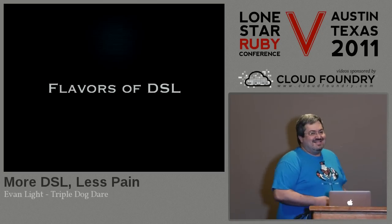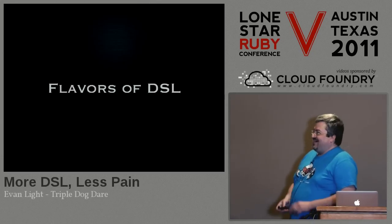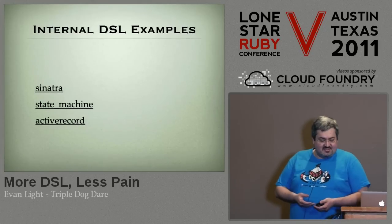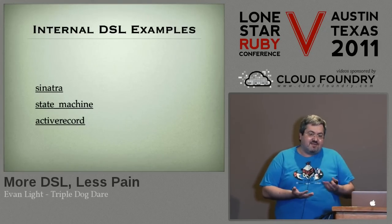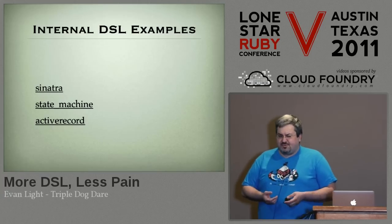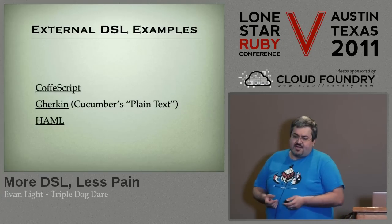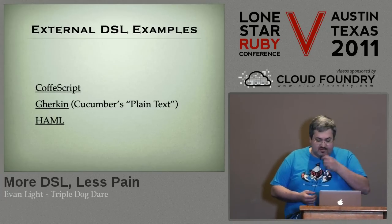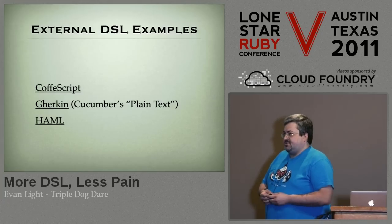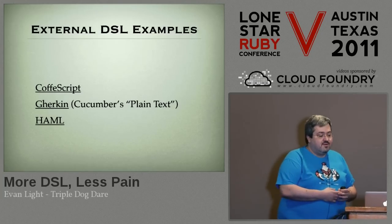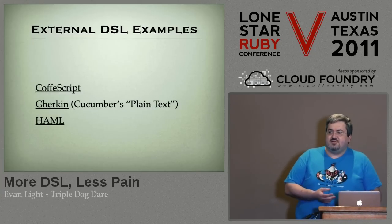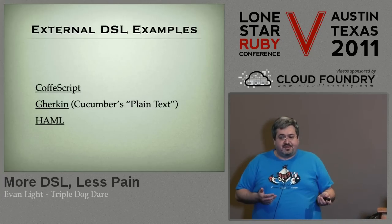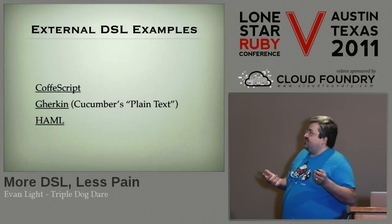DSLs come in two different flavors: internal and external. Some examples of internal DSLs: we saw Sinatra a moment ago; State Machine is another one, common in Rails; Active Record — I'm pretty sure most of you know that one. External DSLs: CoffeeScript is a really good, very popular one these days. Gherkin — talking about Cucumber — is an example; Gherkin is the pure text portion of Cucumber. And then Haml, of course, which is just another form of markup. It can exist in other programming languages — there's a Haml.js, for instance. So it's an external DSL.